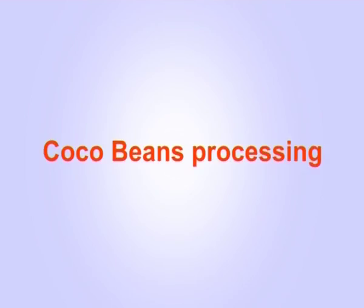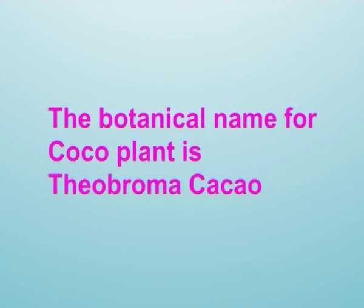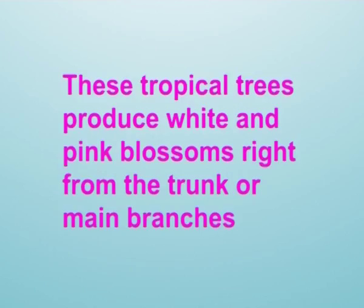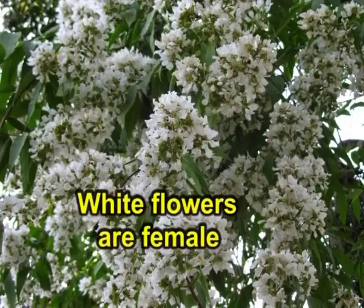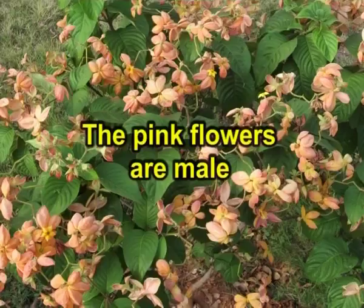Now the second part of this presentation: cocoa beans processing. The botanical name for the cocoa plant is Theobroma cacao. These tropical trees produce white and pink blossoms right from the trunk or main branches; the white flowers are female and the pink flowers are male. Cocoa trees are cultivated under shade trees.